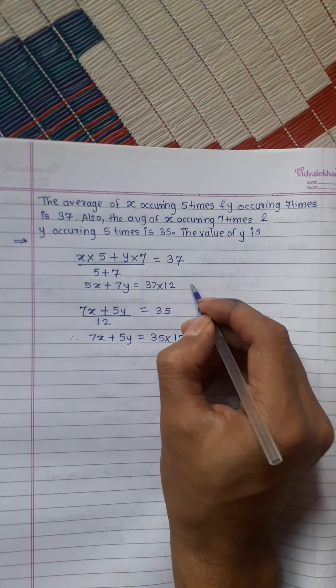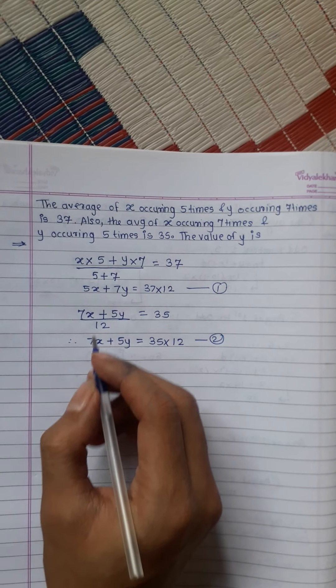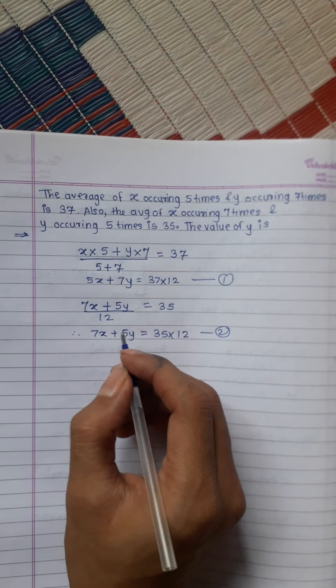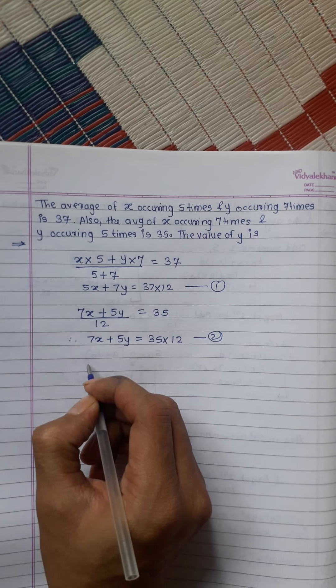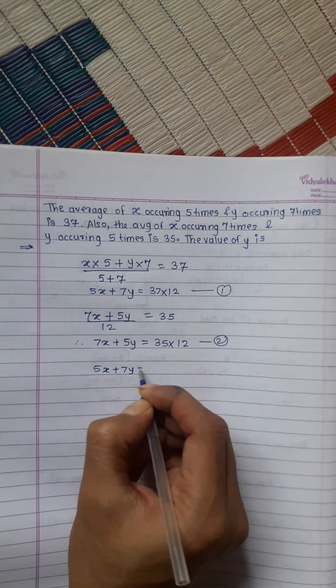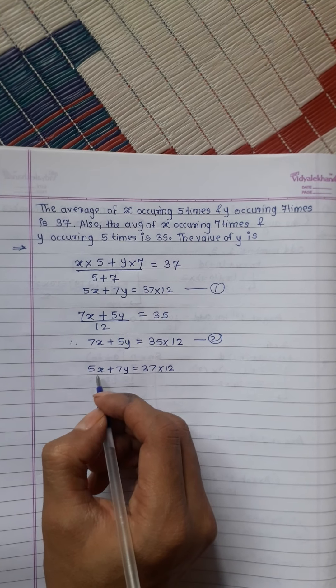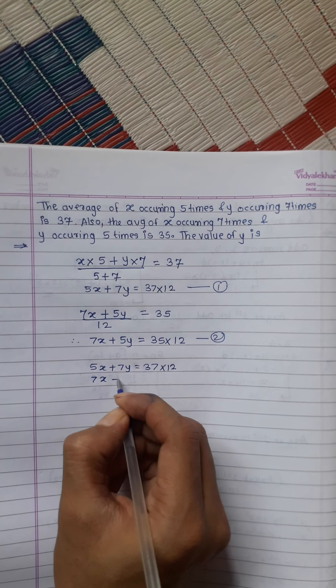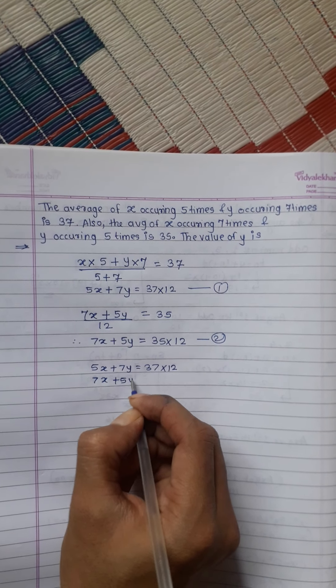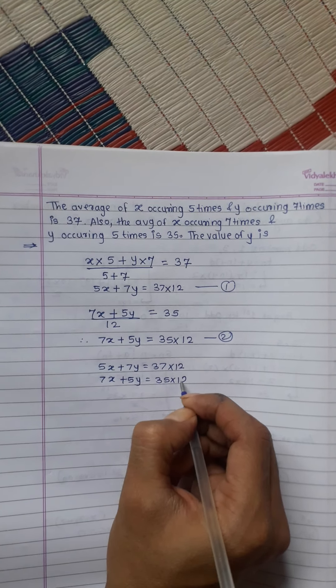This is the first equation and this is the second equation. Now we will solve these two equations. 5x plus 7y equals 37 multiplied by 12. 7x plus 5y equals 35 into 12.